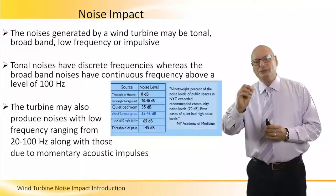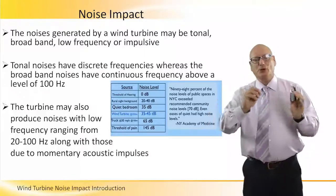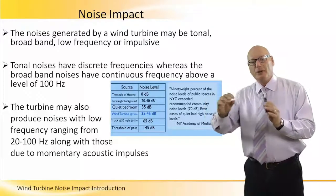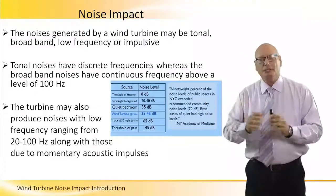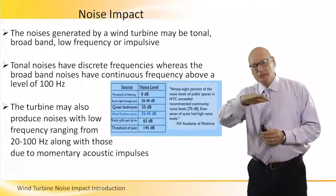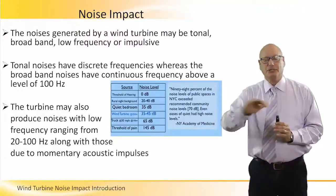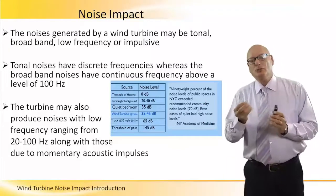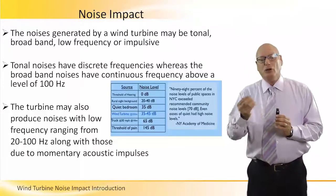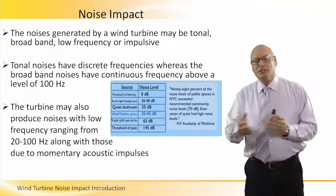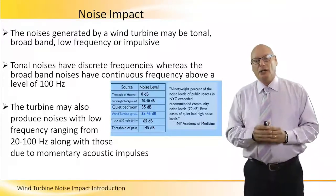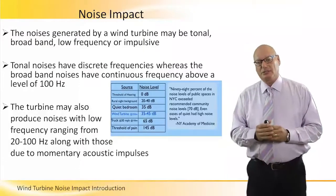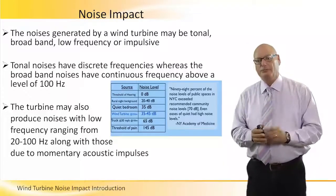Tonal noises have discrete frequencies, whereas broadband noises have a continuous frequency above about 100 Hz. The turbine may also produce noises with low frequencies ranging from 20 to 100 Hz, along with those due to momentary acoustic impulses, and those disturb more.